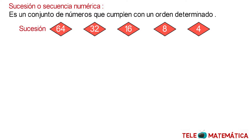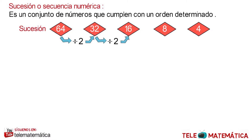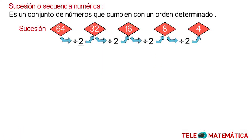We can observe that from the number 64, dividing it by 2, we obtain the number 32. From 32, dividing by 2, we obtain 16. From 16, dividing by 2, we obtain 8. And from 8, dividing by 2, we obtain 4. This value 2 is called the pattern, and in this case the operation of division was used.